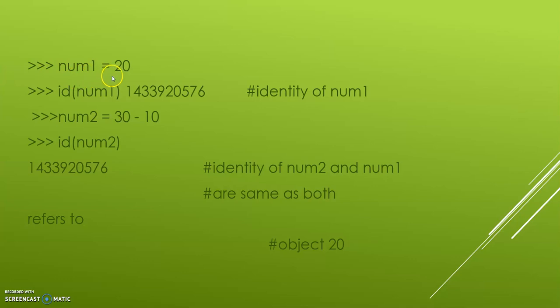num1, that is number 1, equals 20. So number 1 is a variable and the value of it is 20. Now, the ID of this number is 1433920576. This is the identity of number 1.